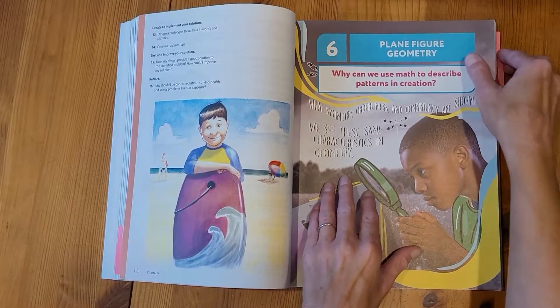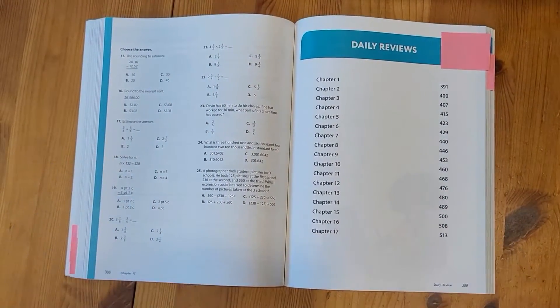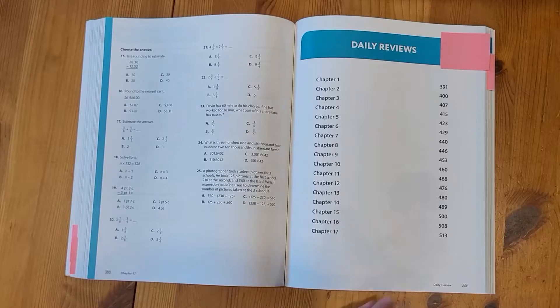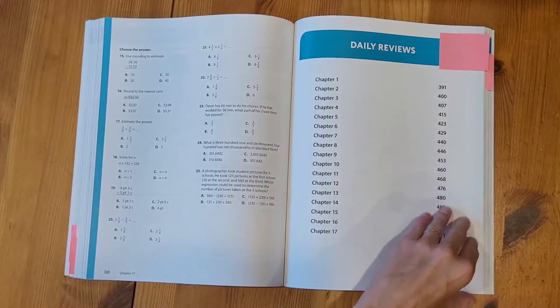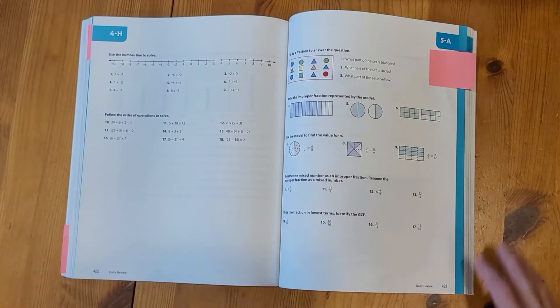So remember though that this book also had those daily reviews. Those are at the back of the book. So I'm in chapter 5. I would go to the chapter 5 page, which starts here on page 423.